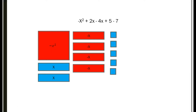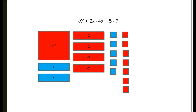Then we have positive 5. These are smaller — those are going to be our little unit tiles, representing positive 5. And then I have minus 7, so that's going to represent the negative part. So that's the layout for this.